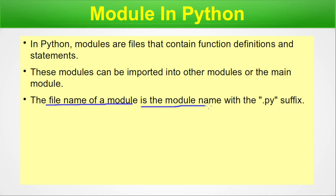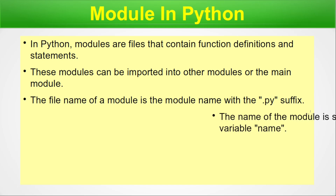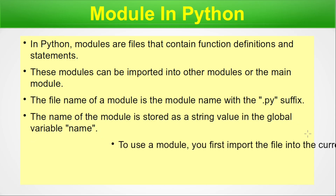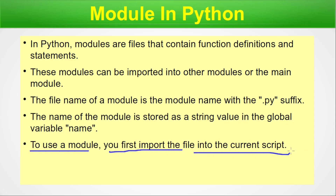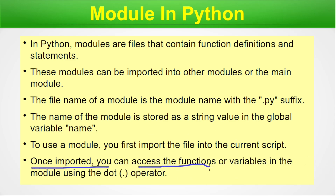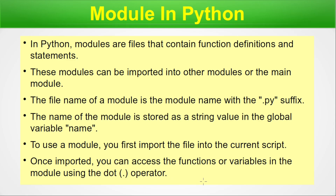The file name of a module is the module name with the .py suffix. The name of the module is stored as a string value in the global variable called __name__. To use a module you first import the file into the current script using the keyword 'import'. Once imported, you can access the functions or variables in the module using the dot operator. The code for today's episode is available from GitHub — download links are in the video description.